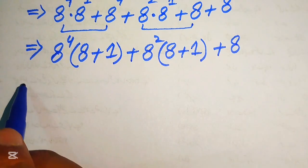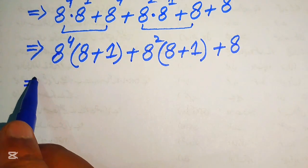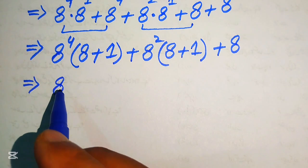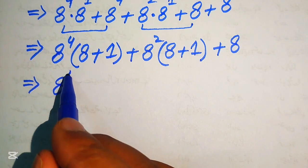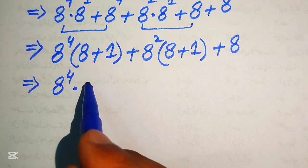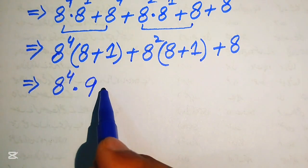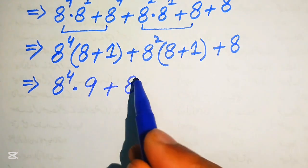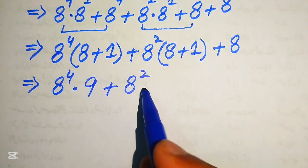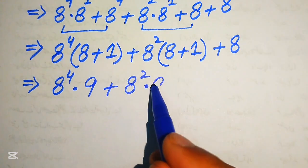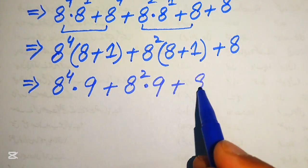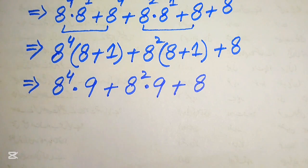Further simplification gives us: 8 to the power of 4 multiplied by 8 plus 1, which becomes 9. Then 8 squared multiplied by 8 plus 1, which again becomes 9, plus our 8.